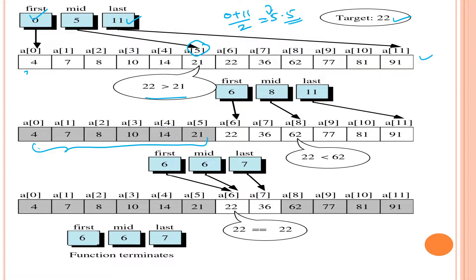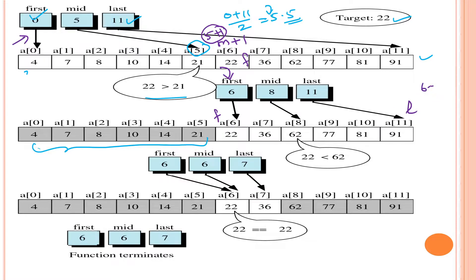To eliminate the first half, we update the first index to middle plus 1. The middle index is 5, so 5 plus 1 equals 6. So 6 is the new first index. Now we calculate the new middle index: 6 plus 11 divided by 2 equals 17 divided by 2, which is 8.5. Taking the floor value, 8 is the middle index now.